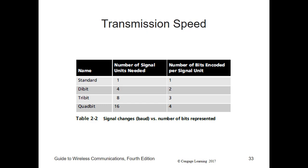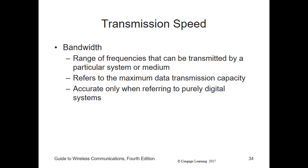Another term used when referring to transmission speed is bandwidth. Although this term is used to refer to the maximum data transmission capacity of a digital system, strictly speaking an analog system's bandwidth is defined as the range of frequencies that can be transmitted by a particular system or medium. Simply put, bandwidth is the difference between the higher frequency and the lower frequency. For example, the human voice ranges between 300 and 3,400 Hz; the difference is 3,100 Hz, which happens to be the bandwidth of the human voice transmitted in the standard analog telephone system.